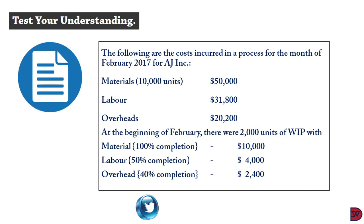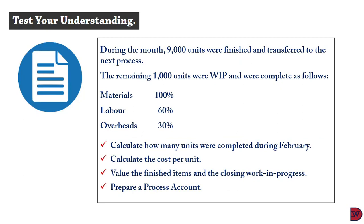The following are the costs for February 2017 for AJ Incorporated: materials — 10,000 units at $50,000; labor — $31,800; overheads — $20,200. At the beginning of February, there were 2,000 units of work in progress: materials 100% complete ($10,000), labor 50% complete ($4,000), overheads 40% complete ($2,400). During the month, 9,000 units were finished and transferred, with the remaining 1,000 units as closing WIP: materials 100%, labor 60%, overheads 30%.